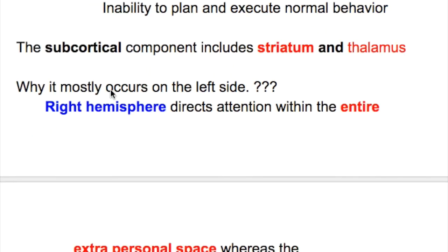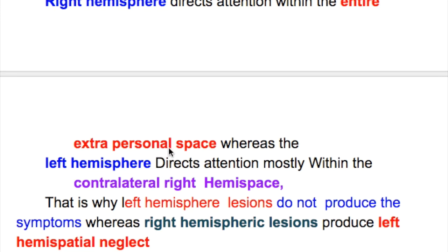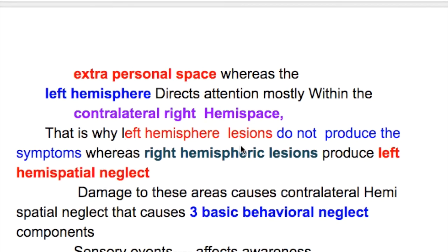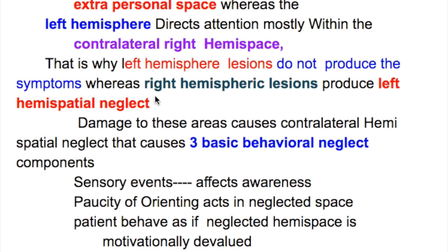Why does neglect most commonly occur on the left side? The right hemisphere directs attention within the entire extra-personal space — that is, on both sides. Whereas the left hemisphere directs attention mostly within the contralateral right hemispace. That is why left hemisphere lesions do not produce these symptoms, whereas right hemispheric lesions produce left hemispatial neglect.